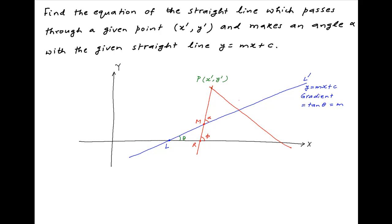From the same point P, it is possible to draw another line that makes an angle alpha with the given line LL-dash. Let's assume that this line cuts the given line at the point N and the x-axis at the point S, and that it makes an angle phi-dash with the positive direction of the x-axis. Therefore, the required lines are PR and PS.